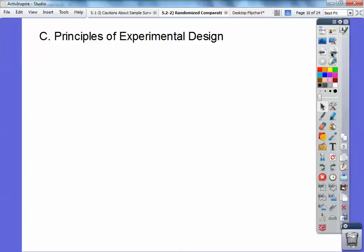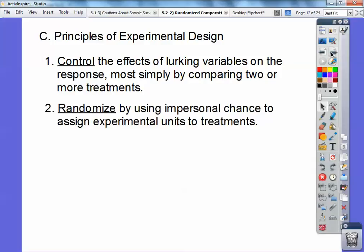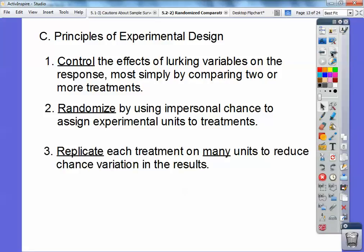Principles of experimental design. One is the control. It controls the effect of lurking variables on the response most simply by comparing two or more treatments. Number two, it randomized by using impersonal chance to assign experimental units to treatments. Number three, it replicates each treatment on many units to reduce chance variation in the result.